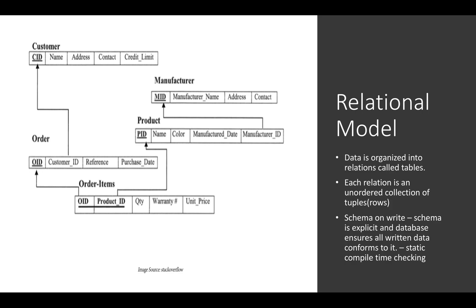That item is defined by a product which is manufactured by a manufacturer. The order table has a customer ID which is the foreign key in this order table and it references the primary key of the customer table. Similarly, order ID and product ID combination is the primary key of the order items table, and product ID is the foreign key which references the primary key of the product table. Relational model is a schema on write model where the schema is explicit and the database ensures that the data conforms to it. It's kind of static compile time checking where we cannot change the schema as per our need and it has to be predefined when we are defining the structure of the database.